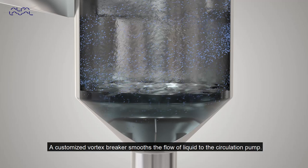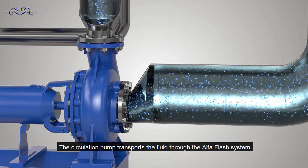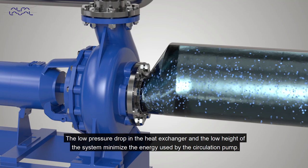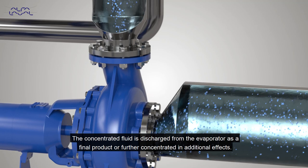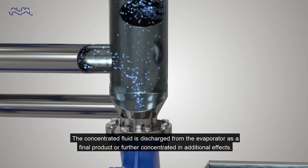A customized vortex breaker smooths the flow of liquid to the circulation pump. The circulation pump transports the fluid through the Alpha Flash system. The low pressure drop in the heat exchanger and the low height of the system minimize the energy used by the circulation pump. The concentrated fluid is discharged from the evaporator as a final product or further concentrated in additional effects.